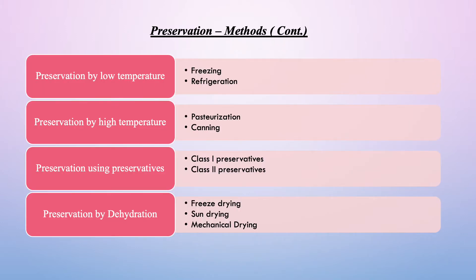The first method is preservation by low temperature. It includes techniques such as freezing and refrigeration. Freezing includes storage of food at a low temperature ranging between minus 4 to minus 29 degrees Celsius, whereas refrigeration is a much more commonly used household practice using the traditional refrigerator.